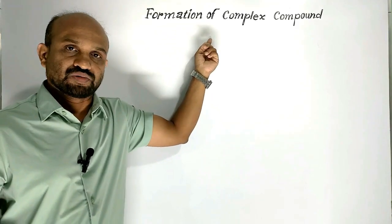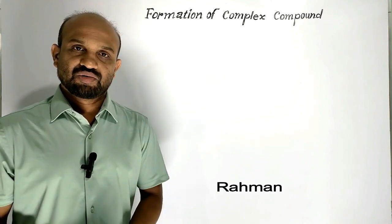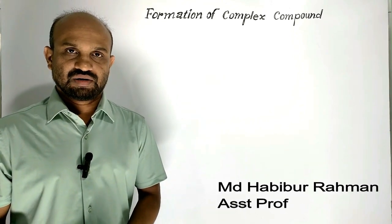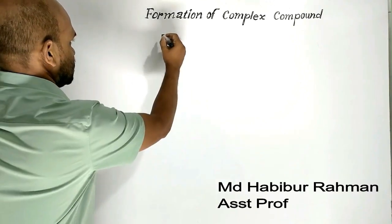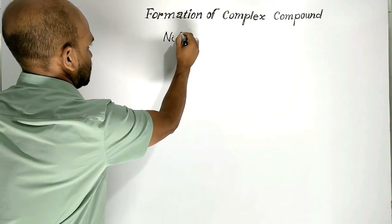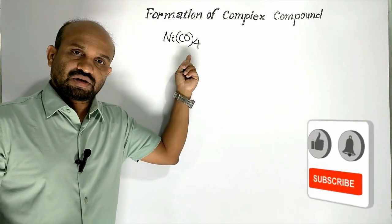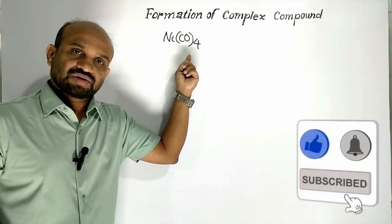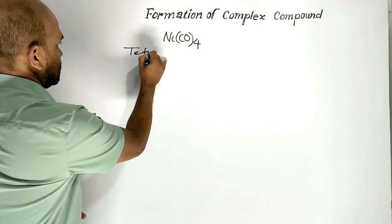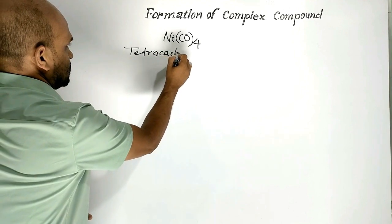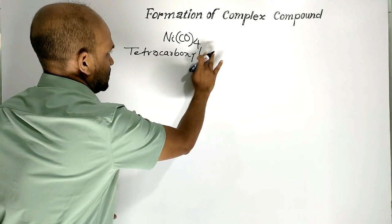Today's lesson is the formation of a complex compound. Today's complex compound is tetracarbonyl nickel. Let us write the formula of the compound and the name of the compound: tetracarbonyl nickel.